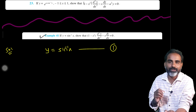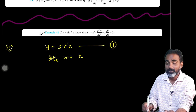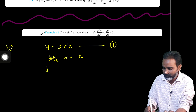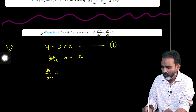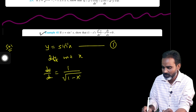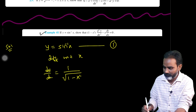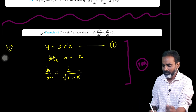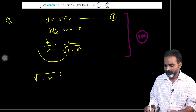Now I am going to differentiate with respect to x. This is compulsory. Differentiating with respect to x: y will become dy/dx. The differentiation of sin inverse of x is 1 divided by root of 1 minus x squared. So dy/dx equals 1 divided by root of 1 minus x squared.